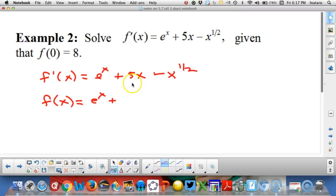the antiderivative of e to the x would be e to the x. The antiderivative of 5x would be 5x squared over 2, adding 1 to the power and dividing by the new power.